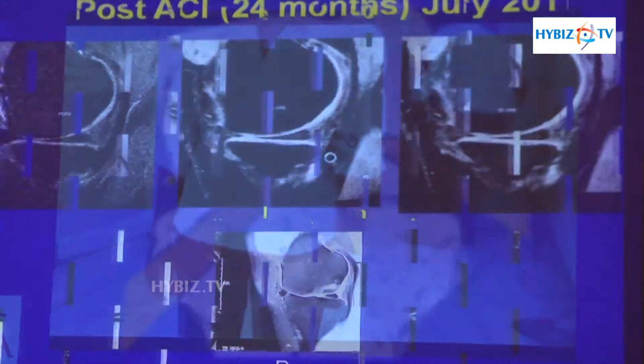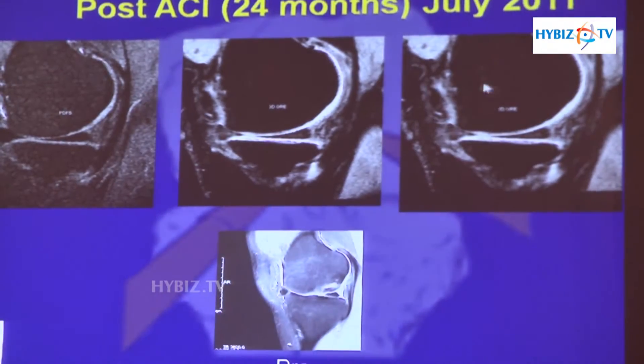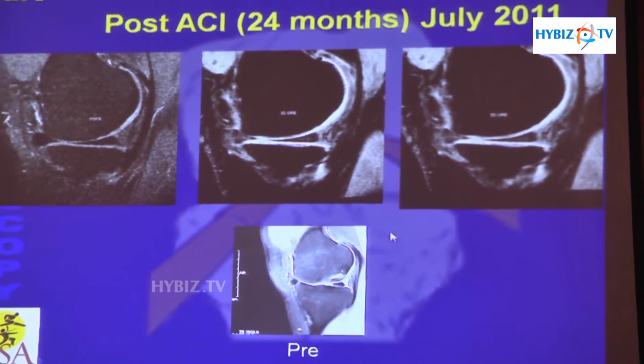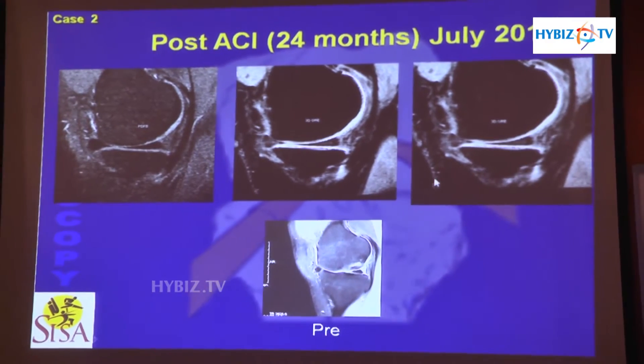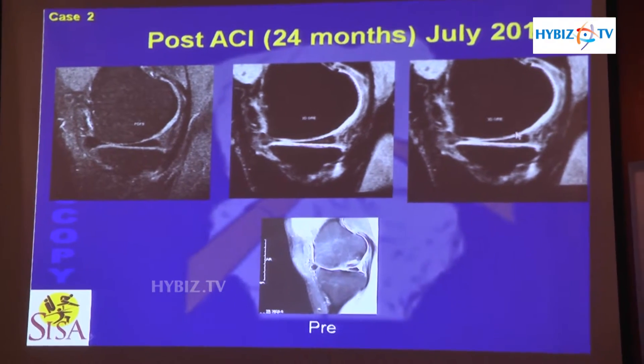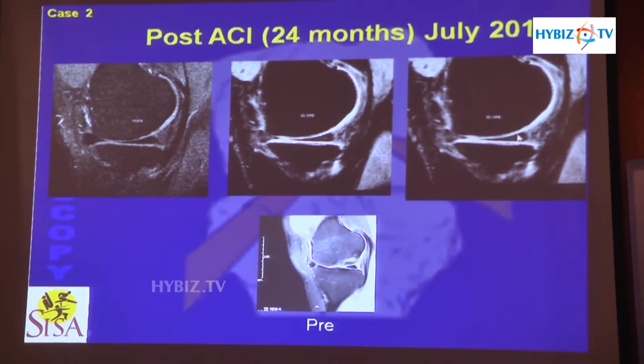We put that grown chondrocytes. Two-year follow-up — this is a small incision. Earlier we used to do it with a mini incision. This is a post-op MRI showing the cartilage defect and the new cartilage.